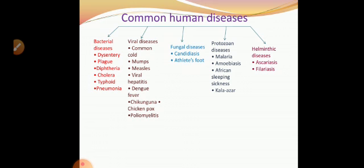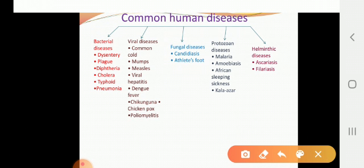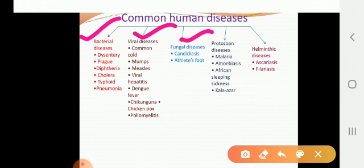Let us see the common diseases of human beings. Bacterial diseases include dysentery, plague, diphtheria, cholera, typhoid, and pneumonia. Viral diseases include the common cold, mumps, measles, viral hepatitis, dengue fever, chikungunya, chickenpox, and poliomyelitis. Fungal diseases include candidiasis and athlete's foot. Protozoan diseases include malaria, amoebiasis, African sleeping sickness, and kala-azar. Helminth diseases include ascariasis and filariasis. These are examples; we will see full explanations in upcoming videos.